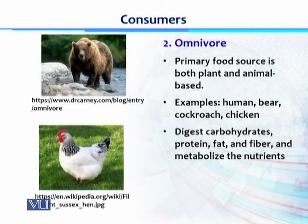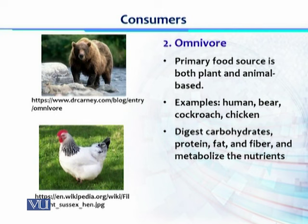The third category of consumer is known as omnivores. The primary food sources for omnivores can be both plants and animals, so omnivores have a larger choice of food to consume. For example, humans are a very common example of omnivores, along with bears, cockroaches, and chickens. They have the ability to digest all macro components of food — carbohydrates, proteins, fats, and fibers — and metabolize all these nutrients through cellular respiration and digestion.